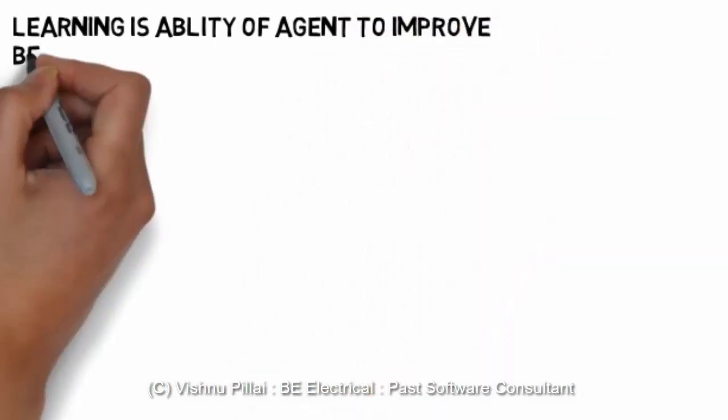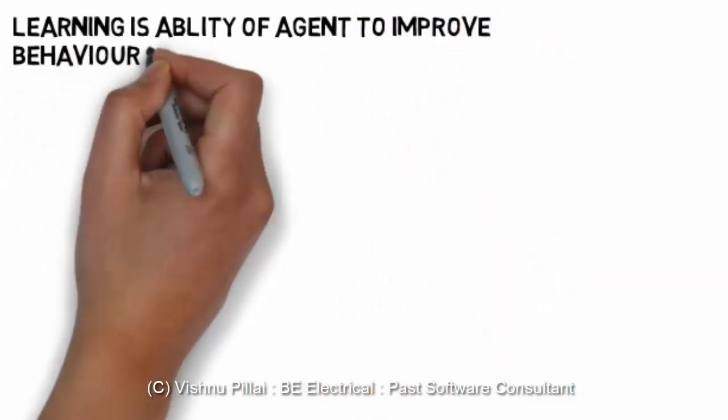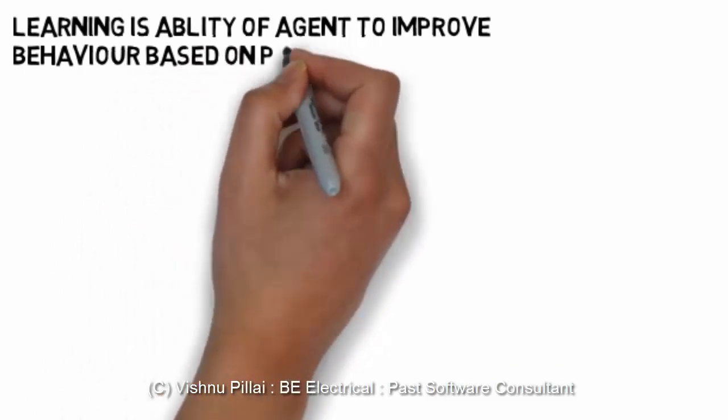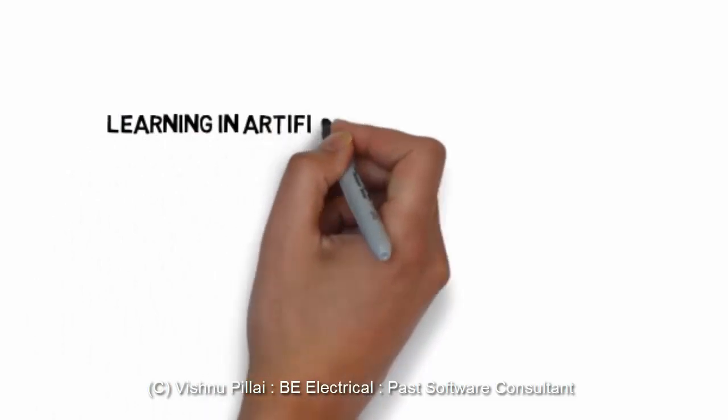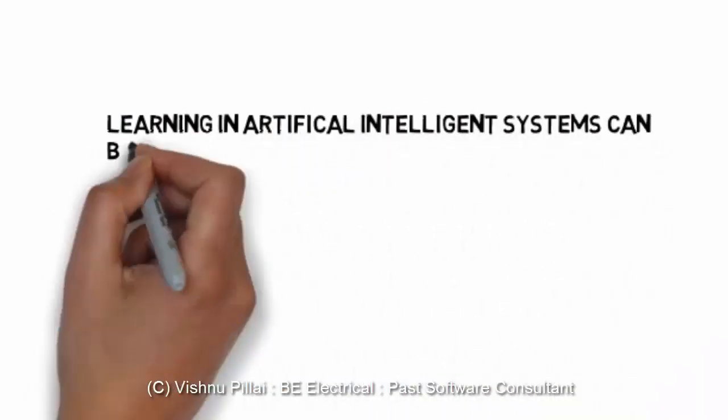Learning is the ability of an agent to improve on its knowledge or its behavior based on performance. Based on the performance input, the agent should be able to get new information.